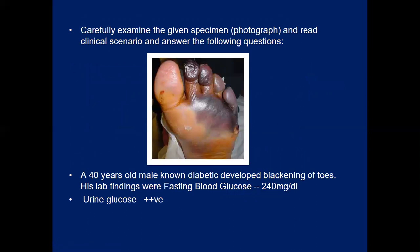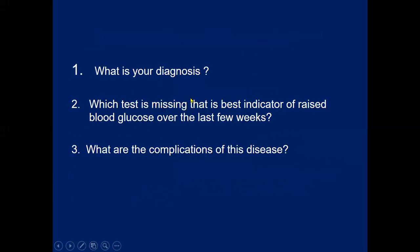Examine the given specimen photograph showing blackening of the toes in a 40-year-old male diabetic. Lab findings show fasting blood glucose 240 mg/dL and urine glucose 2+, clearly suggesting diabetic gangrene. You may also be asked which test is missing and is the best indicator of raised blood glucose over the last few weeks — that is HbA1c, which we discussed in the last lecture.